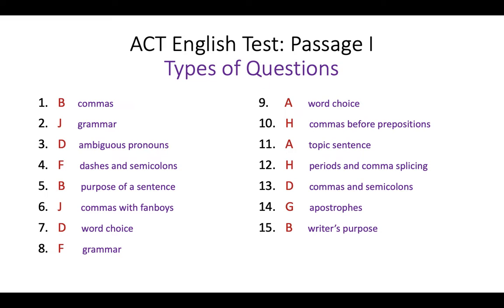On passage one, the answers are in red and each question tests a specific rule. Question 1 tests commas, 2 tests grammar, 3 tests ambiguous pronouns, 4 tests dashes and semicolons, 5 tests understanding the purpose of a sentence, 6 tests commas with fanboys, 7 tests word choice, 8 tests grammar, 9 tests word choice, 10 tests commas before prepositions, 11 tests topic sentences, 12 tests periods and comma splicing, 13 tests commas and semicolons, 14 tests apostrophes, and 15 tests writer's purpose. Every question has a goal — testing what you know.